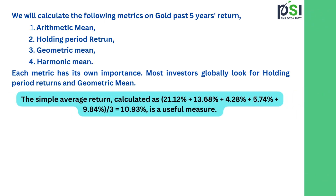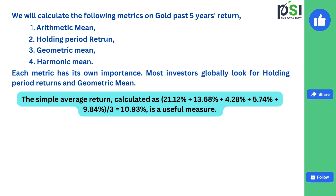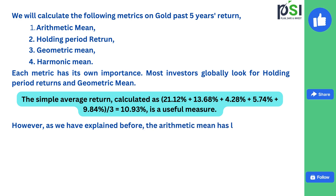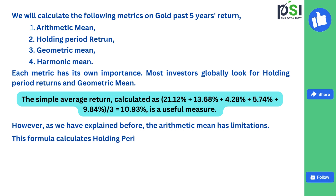The first metric is the arithmetic mean. The arithmetic mean is 10.93%. It is a useful measure. However, as explained before, arithmetic mean has its own limitations. This formula is for calculating holding period returns for multiple periods.